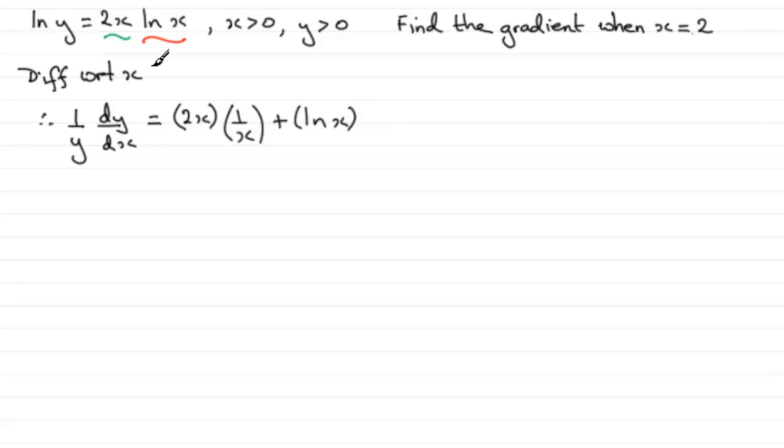So if we tidy this up, we've got dy by dx. Let's just say we've got 1 over y at this stage, 1 over y dy by dx equals, and then if we tidy this term up we've just got 2 because the x's cancel.